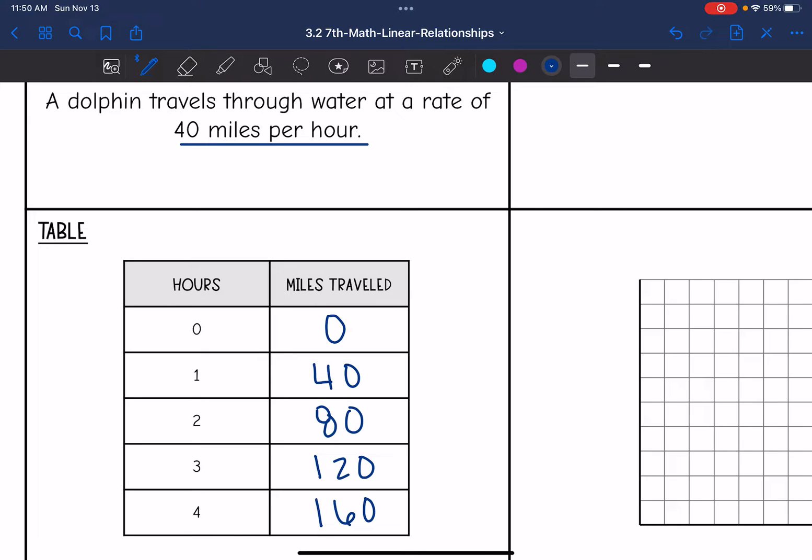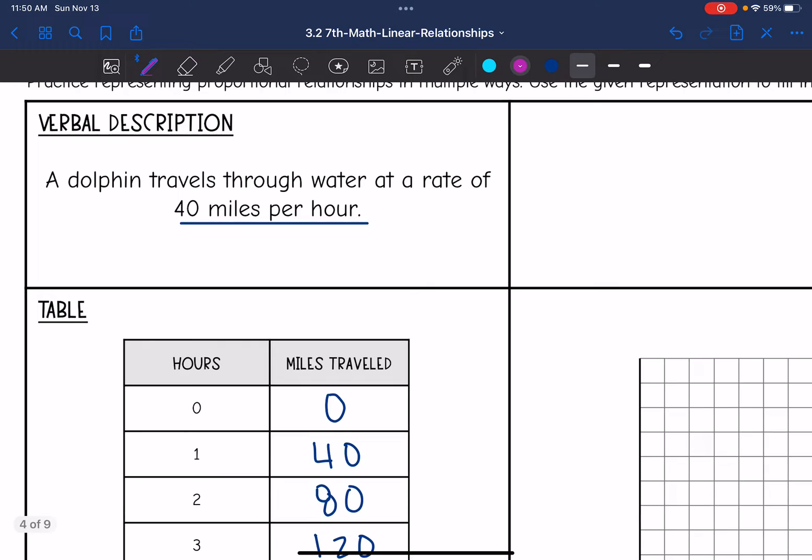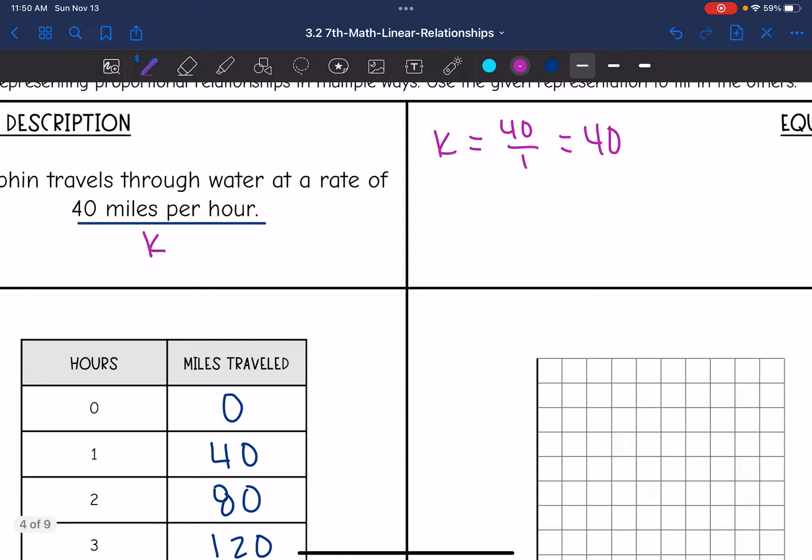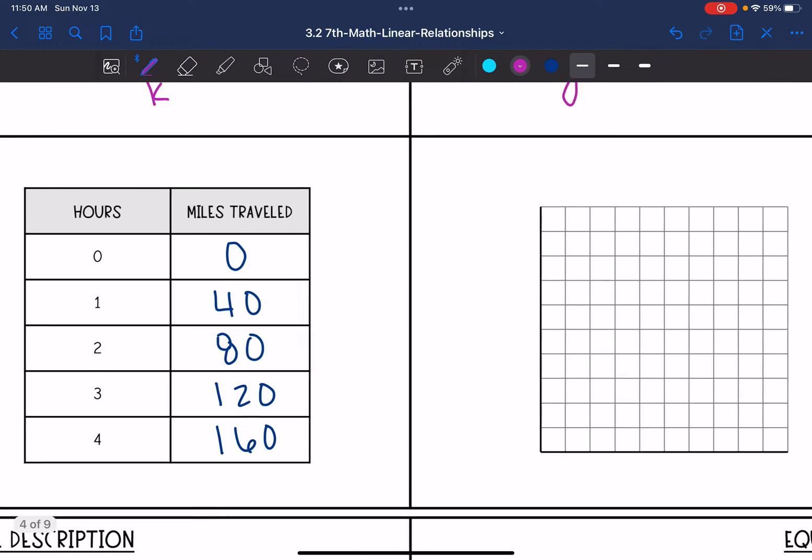So if you cannot already see it, the constant of variation is going to be 40. If we did y divided by x, 40 divided by 1, it would be 40. And they gave us that unit rate in the verbal description too. So that means my equation is y equals kx. And then the last thing I need to do is fill out the graph.